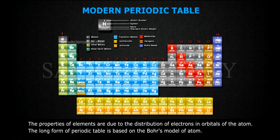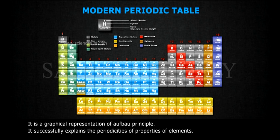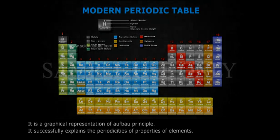The long form of periodic table is based on the Bohr model of atom. It is the graphical representation of the Aufbau principle. It successfully explains the periodicities of properties of elements.